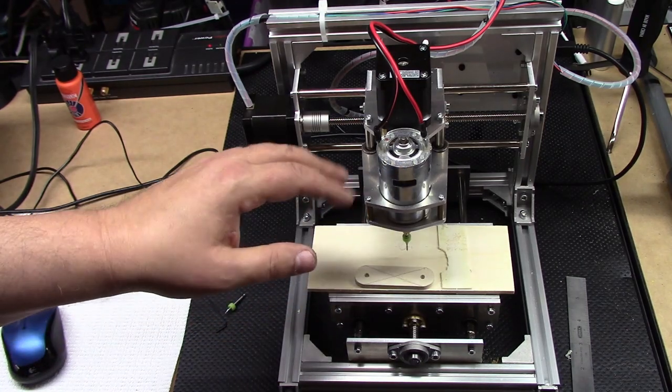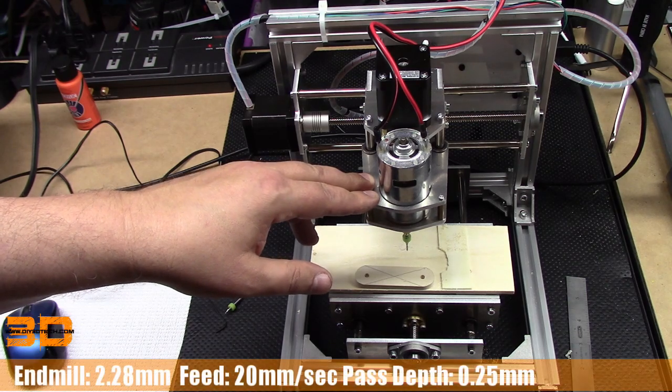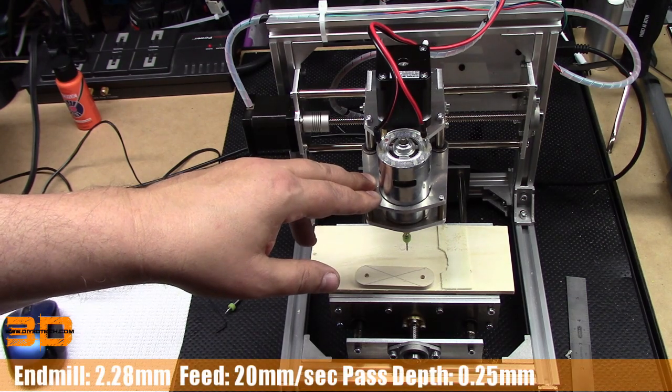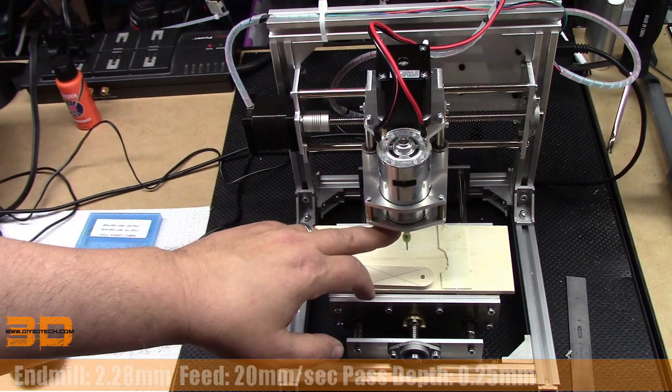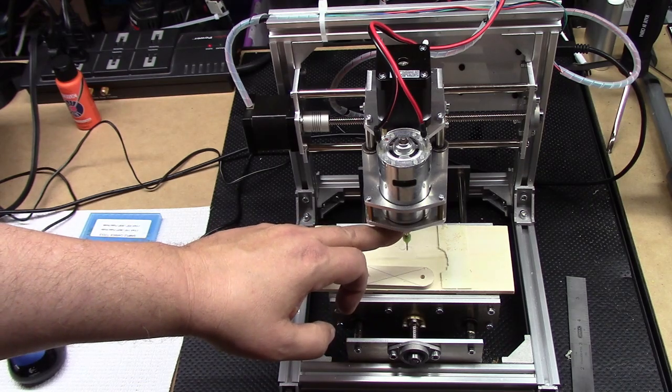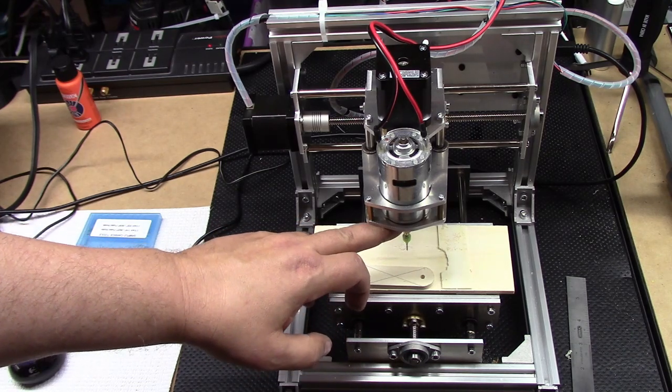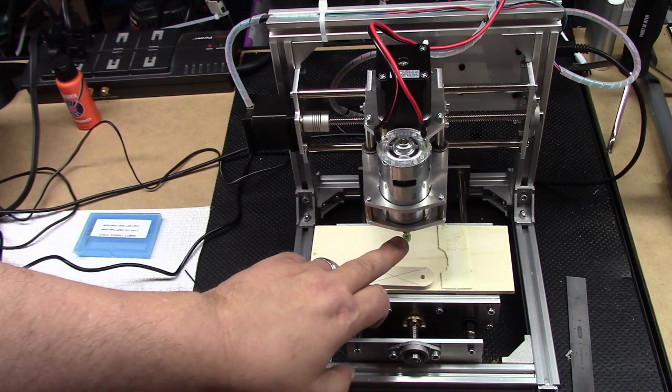Now I did run it a little bit slow. I ran at 20 millimeters a second, I believe a quarter millimeter per pass. I wanted to take it easy because one of the things is it's a rather long shank between the top of the motor and the tip.